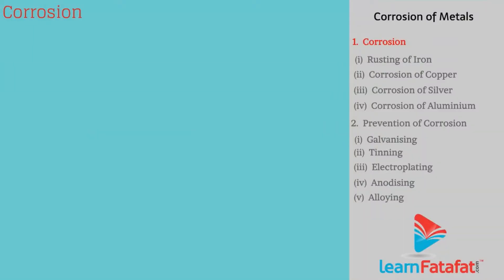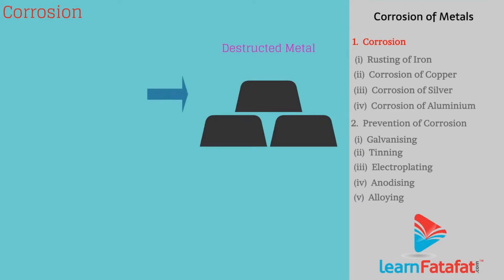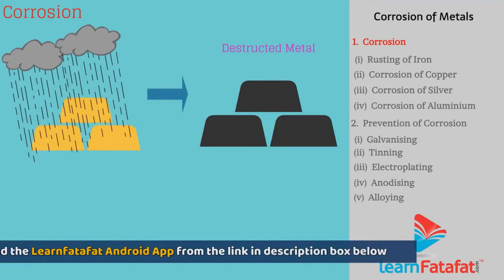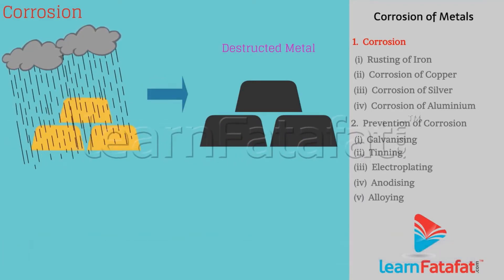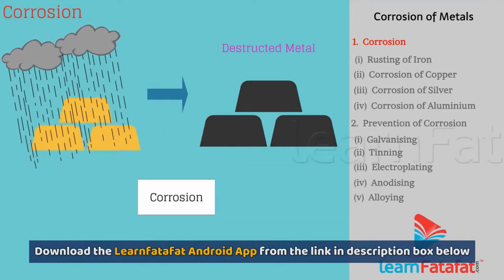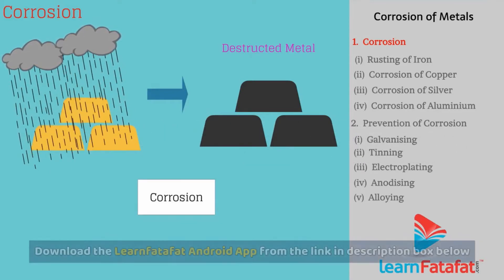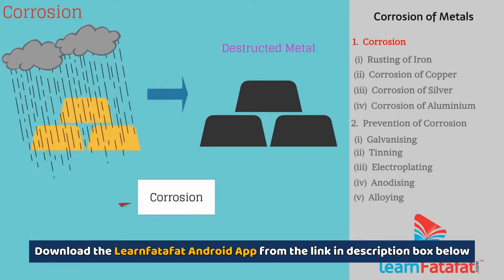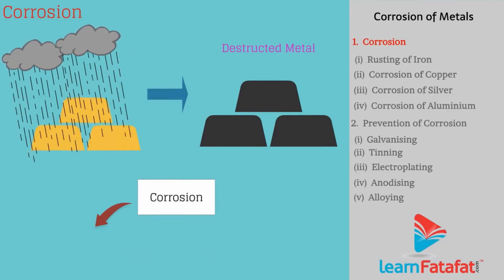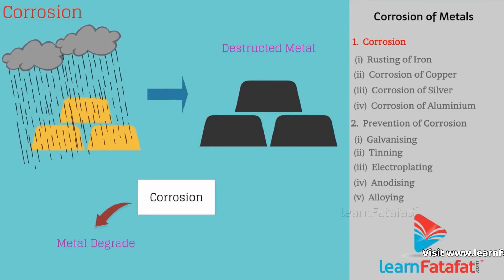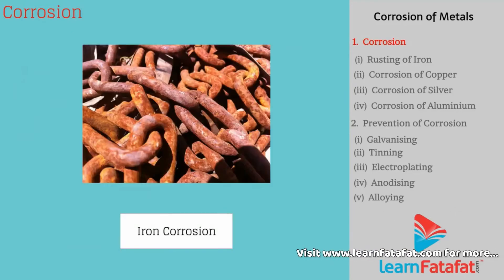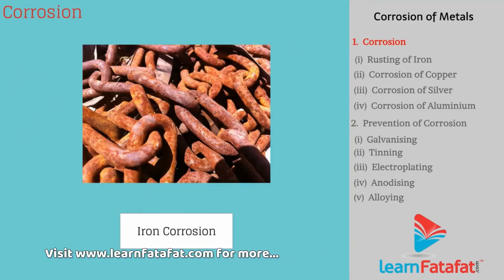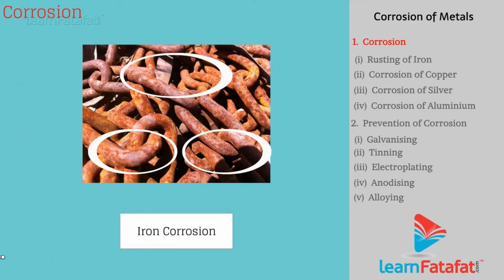Corrosion is the gradual destruction of metal due to the effect of its surrounding environment. Due to corrosion, properties of metal degrade. A familiar example of corrosion is iron — you might have seen the brown color that appears on things made of iron. This is due to corrosion.